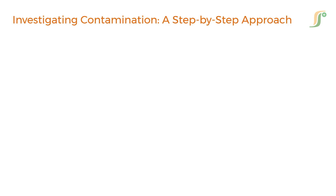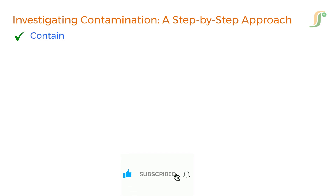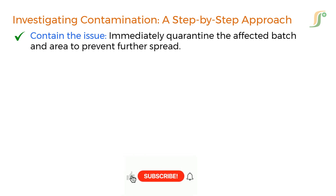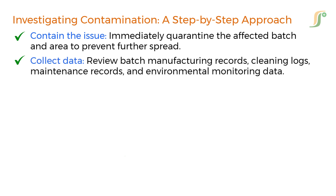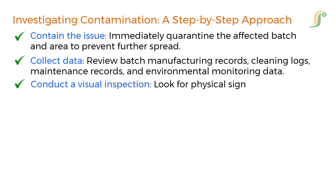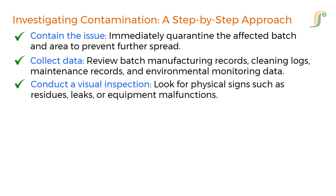When contamination is detected, a systematic investigation must follow to identify the root cause and prevent recurrence. First, contain the issue by immediately quarantining the affected batch and area to prevent further spread. Then collect data by reviewing batch manufacturing records, cleaning logs, maintenance records, and environmental monitoring data. Conduct a visual inspection and look for physical signs such as residues, leaks, or equipment malfunctions.